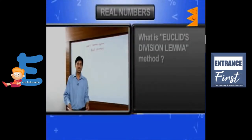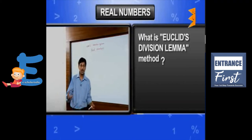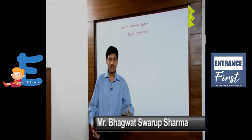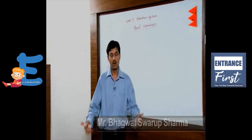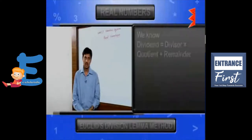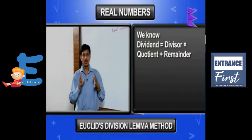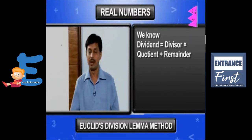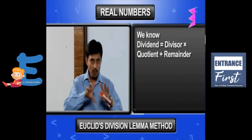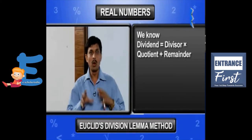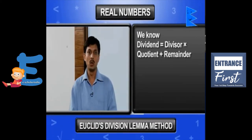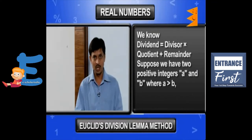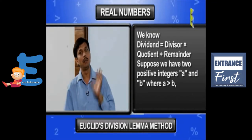We will discuss what Euclid's Division Lemma is. Basically, Euclid's Division Lemma is an extended form of the division algorithm. The division algorithm states that dividend equals divisor into quotient plus remainder. To make it more formal, suppose we have two positive integers A and B.